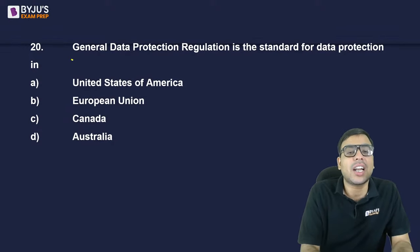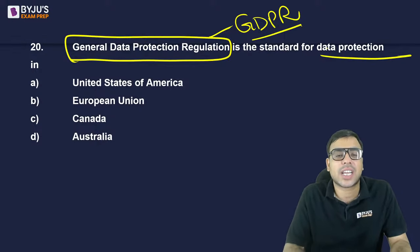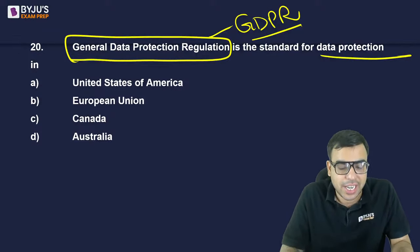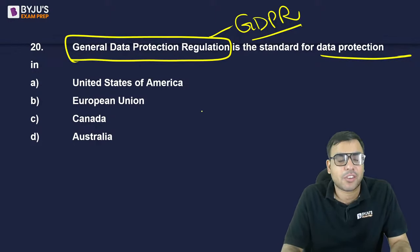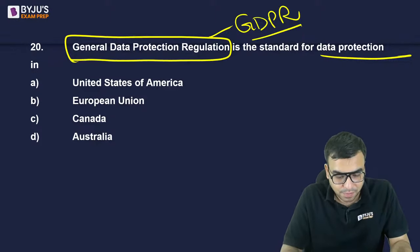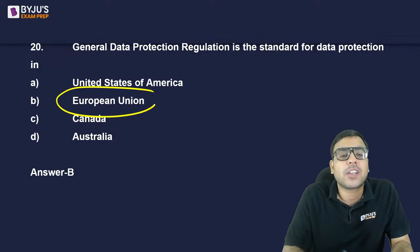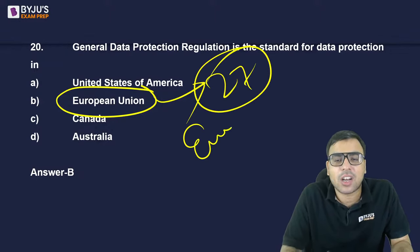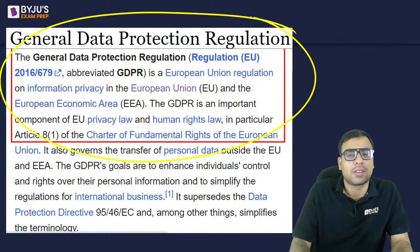GDPR — General Data Protection Regulation — is the data protection law of which country? USA, European Union, Canada, or Australia? GDPR is the standard for data protection of the European Union — B is the right answer. The European Union is a grouping of 27 member European countries.